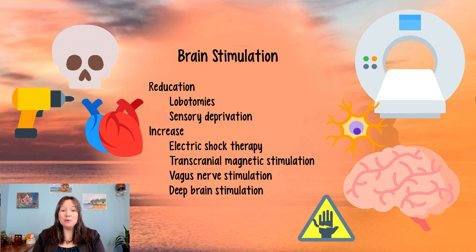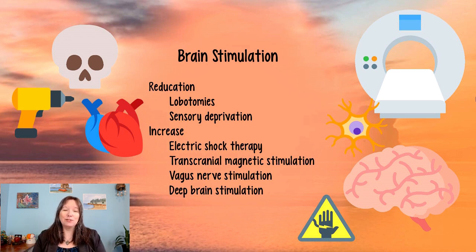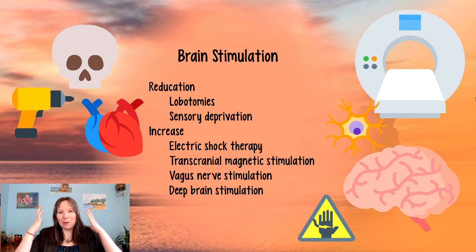Another type of brain stimulation reduction is sensory deprivation — such as going into a float tank or sensory deprivation chamber to calm the mind or observe brain activity. In addition to reduction, we can also increase brain stimulation by sending more signals to the brain to wake it up or make it active in a different way. One well-known pop culture example is electric shock therapy, which a hundred years ago could take a very aggressive form.